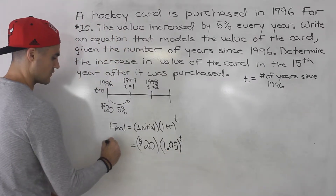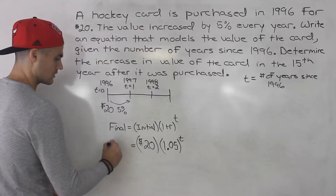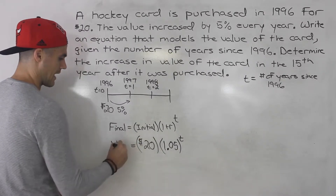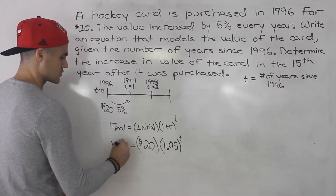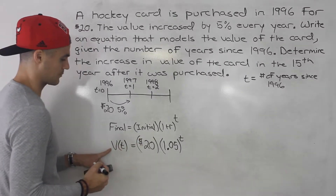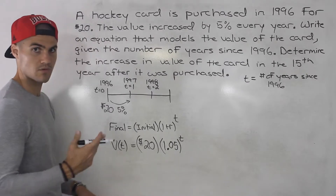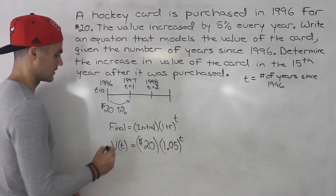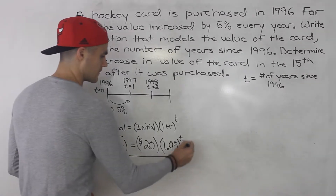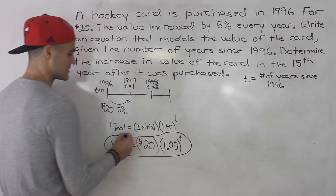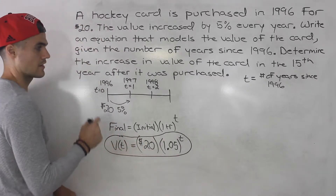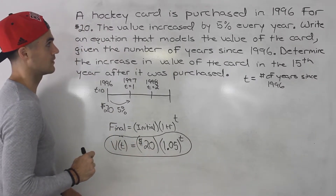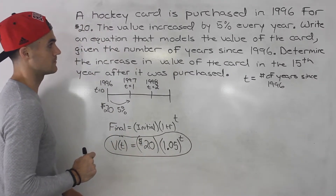So the value of the card as a function of t — let's call it V(t) — equals 20 times 1.05 to the power of t. That is the equation that models this scenario, and that's the first part of the question.